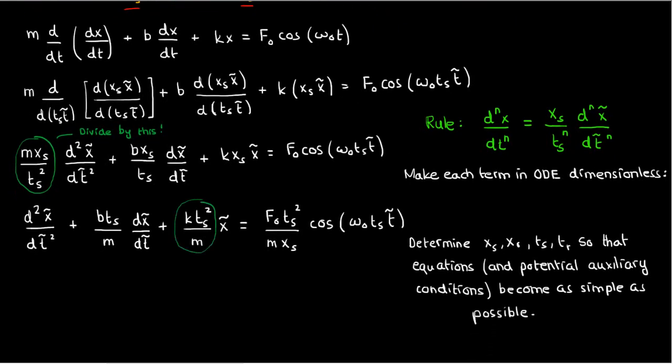Here's what I'm going to do. I'm going to set this lump of constants to 1. If that's the case, then my tₛ² = m/k, which means tₛ = √(m/k). The only other unknown is xₛ, which is only in the F₀·tₛ²/(m·xₛ) term.